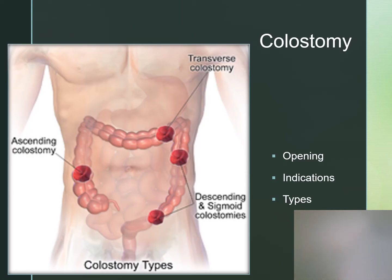A colostomy is an opening into the large bowel. Fecal matter will be semi-liquid to formed — more formed the closer the ostomy is to the rectum within the colon. Indications include cancerous lesions, ulcerative inflammatory processes, multiple polyposis, or injury to the bowel. It can be temporary or permanent and can be placed in the ascending, transverse, descending, or sigmoid colon.